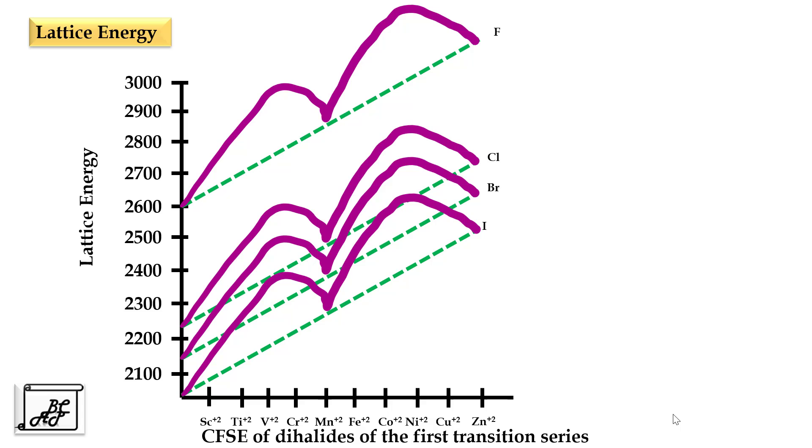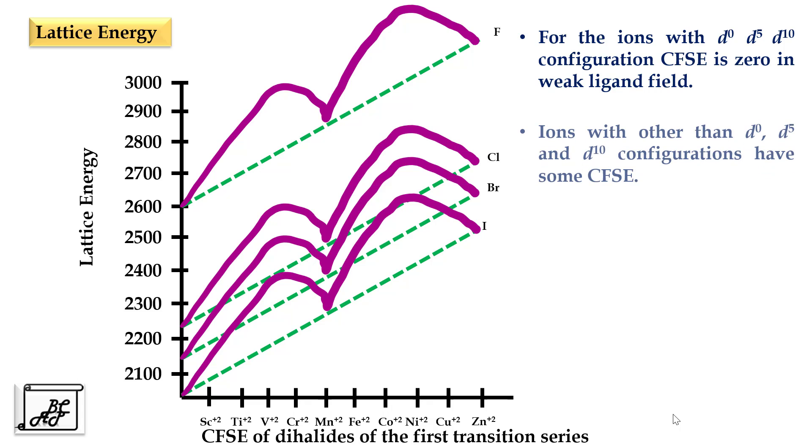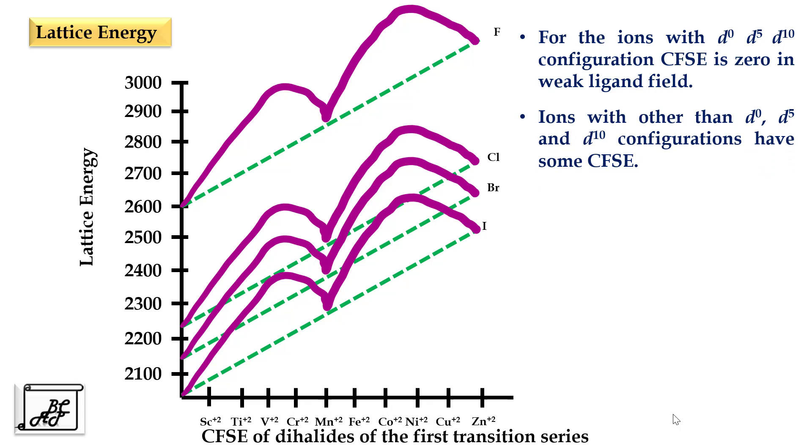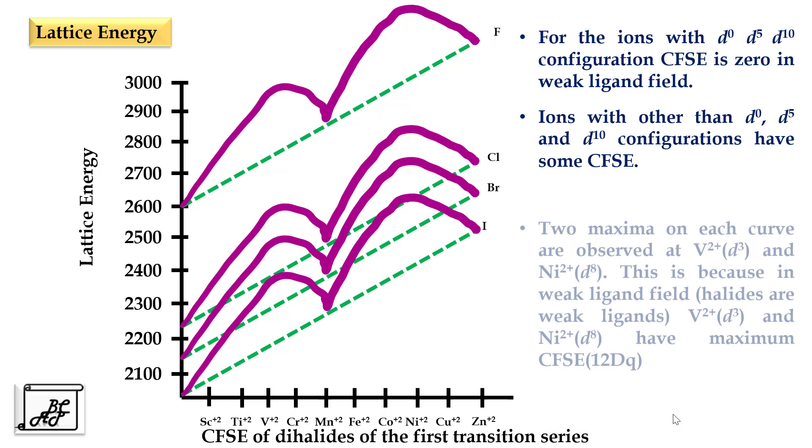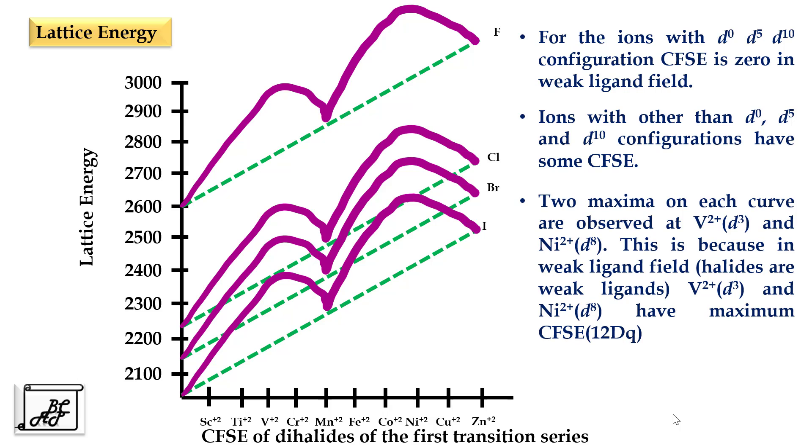From this double humped curve we can easily understand that d0, d5, and d10 configurations are on the straight line. This is because they have zero CFSE. Other than these, the other ions have some CFSE therefore they do not lie on the straight line but it results into a double humped curve. In this way there are two maximas observed. The first maxima is at vanadium 2+ (d3 electronic configuration) and the second maxima is at nickel (d8 electronic configuration). This is because in case of weak ligand field, d3 and d8 electronic configurations have maximum CFSE that is 12dq.